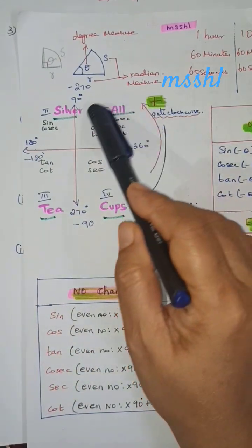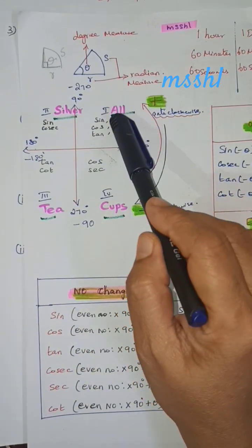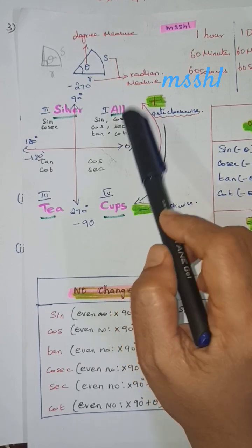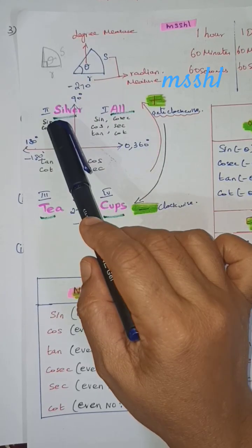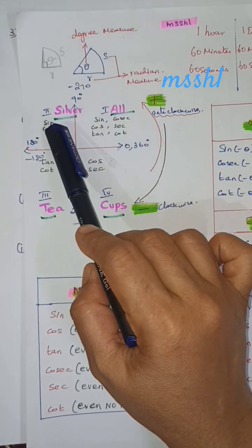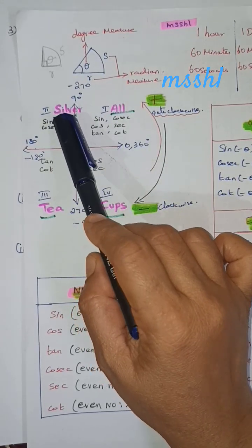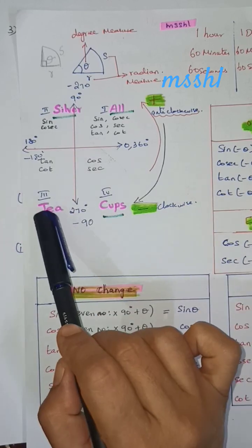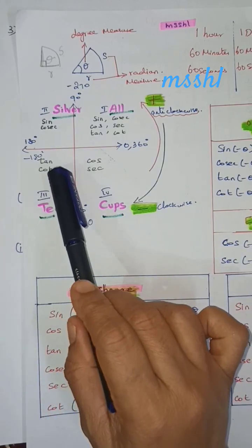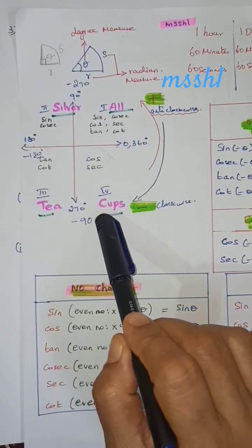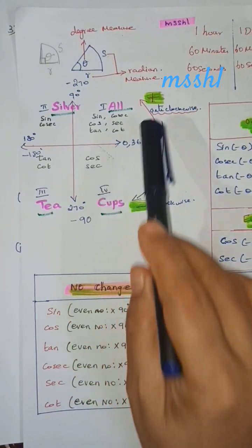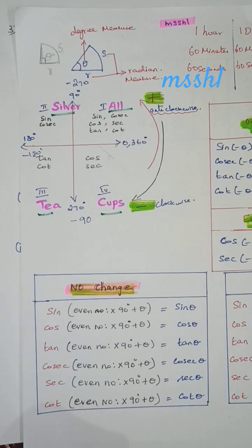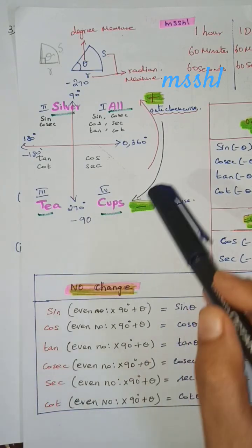All values are positive. Silver: sine is positive. T is for tan. Cups is cos. That is: All Silver Tea Cups — this is the hint to remember the sign rules per quadrant. You can see the first hint.